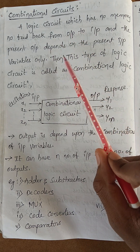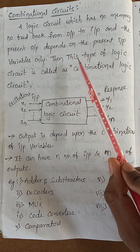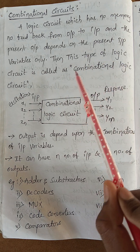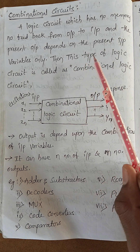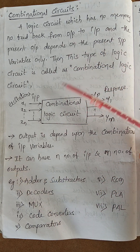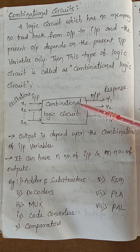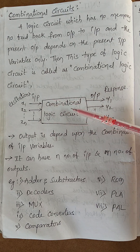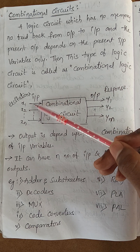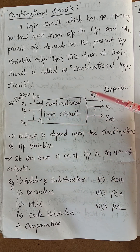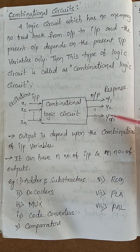We know that the combinational logic circuit can be represented by a block diagram. The combinational logic circuit has inputs x1, x2, x3 up to xn, and outputs y1, y2, up to yn.